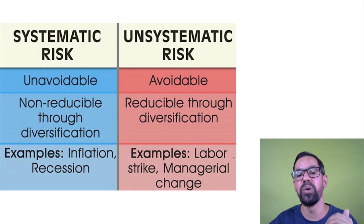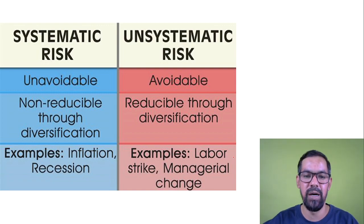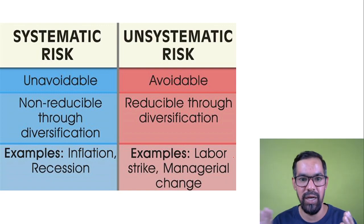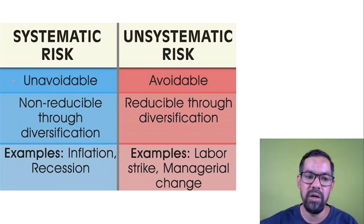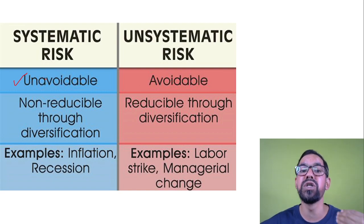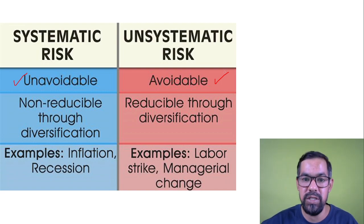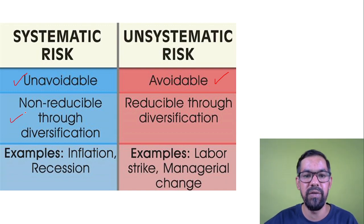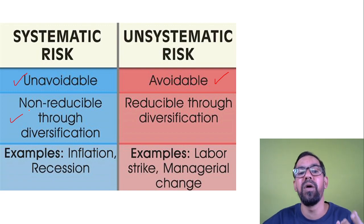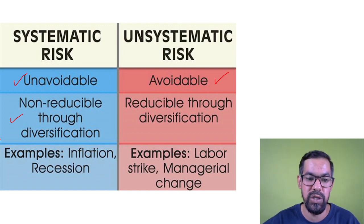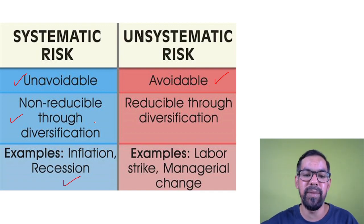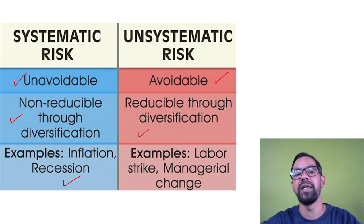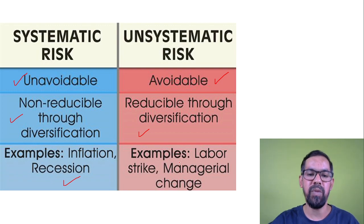Systematic risks are unavoidable in nature because they have a broader impact — COVID-19, recession, world war situations. Unsystematic risks are controllable in nature — employee strikes, system failures. Systematic risk is non-reducible through diversification; you cannot diversify it. If there is a COVID-19 problem, it impacts the entire world. Unsystematic risks are avoidable and can be diversified. Labor strikes and managerial changes are examples of unsystematic risk.